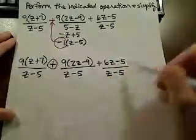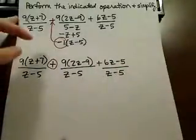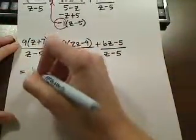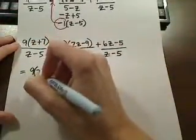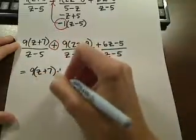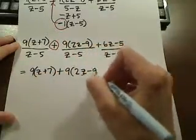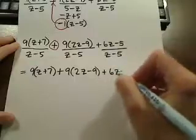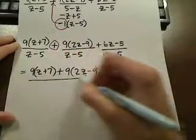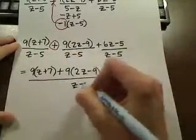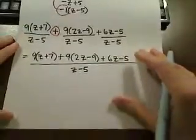So we have common denominators now. We can just bring our numerators together and simplify. So this is 9 times z plus 7, and 9 times 2z minus 9, and 6z minus 5. So now all of that is written over this common denominator of z minus 5.